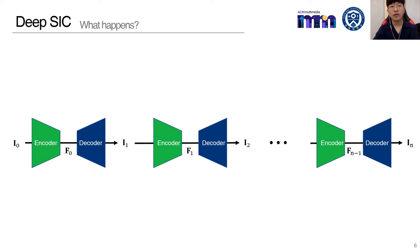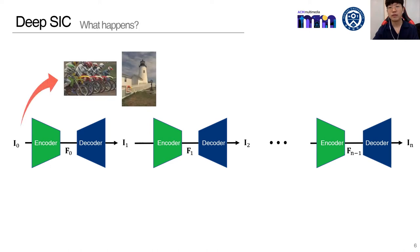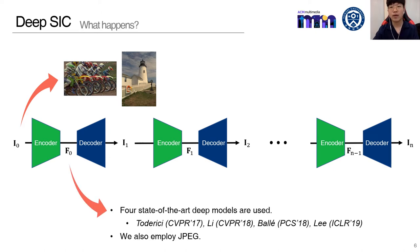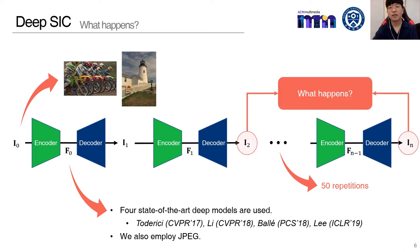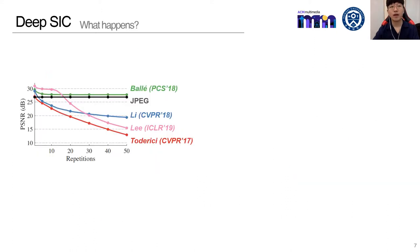Now, I'll introduce what happened during successive image compression. For this, we use some sample images, four state-of-the-art deep learning models, and also employ JPEG compression as a reference. We conduct the experiments with 50 repetitions. Then, what will happen to the decoded images? Here, I'm going to talk about some really surprising results.